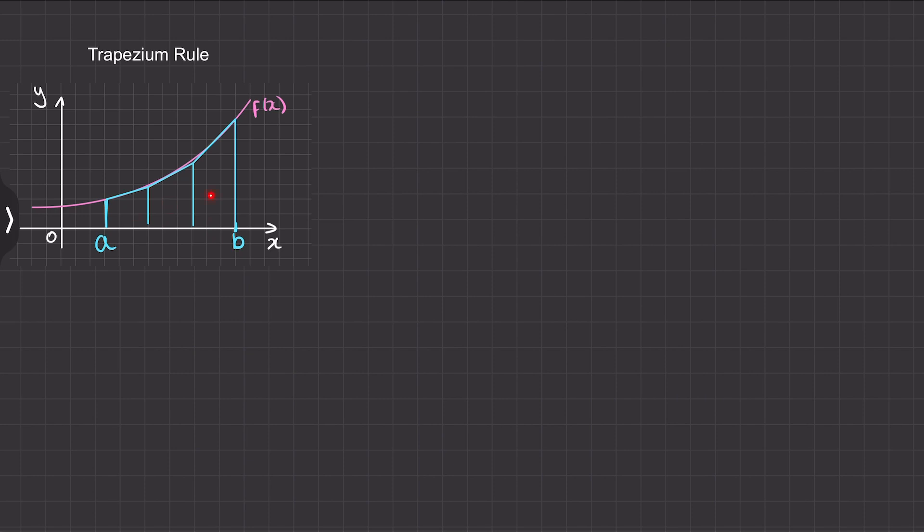So to work out the area of each of these trapeziums we need to work out their heights and we know that all of these lengths are parallel. This is the x value of a, the y value will be this, the height of the trapezium will be this y value here.